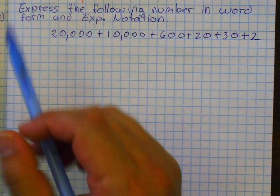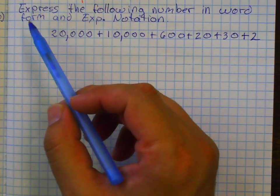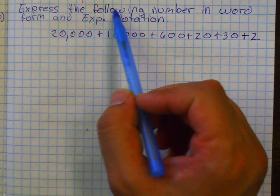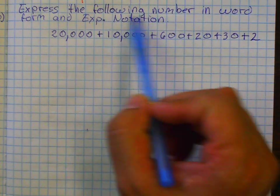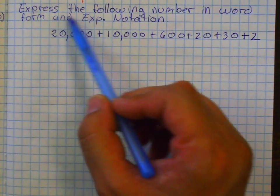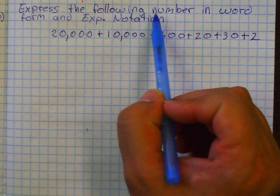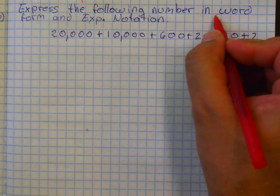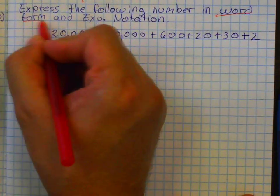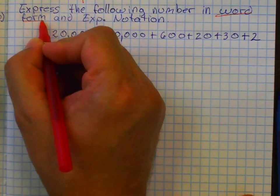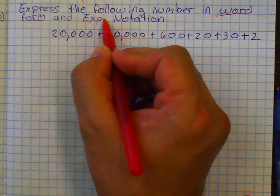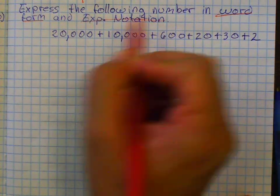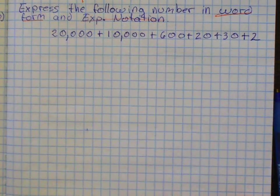In this example, we're going to express the following number in word form and expanded notation. I need to express my number in word form, using words, and the expanded notation, which is the digit times its placement.